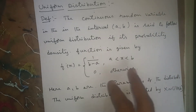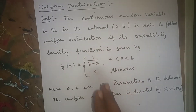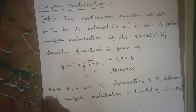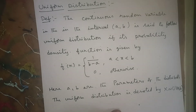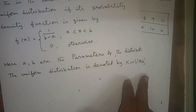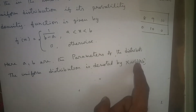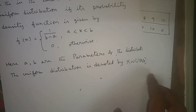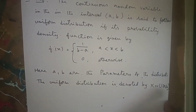A continuous random variable in the interval (a, b) is said to follow a uniform distribution if its PDF is f(x) = 1/(b − a) for x between a and b, otherwise 0. Here a and b are called the parameters of this uniform distribution. It is denoted as X ~ U(a, b). This is the definition of uniform distribution.